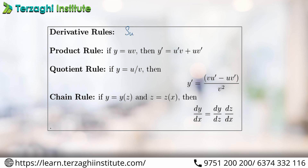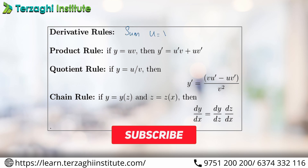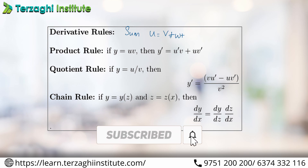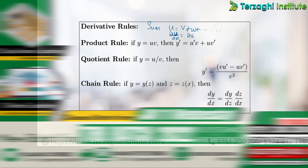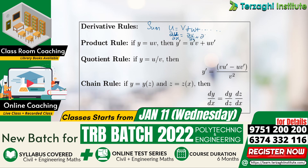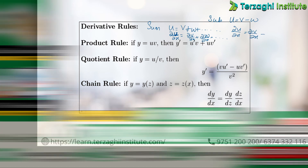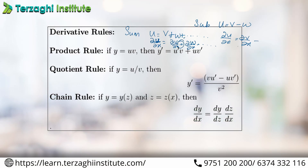Partial differentiation: Sum rule — U is the function of V plus W plus etc. Do u with respect to x: differentiate — dou u by dou x is equal to dou v by dou x plus dou w by dou x. This is the subtraction rule: U is equal to V minus W. So dou u by dou x is equal to dou v by dou x minus dou w by dou x. This is basic operation.